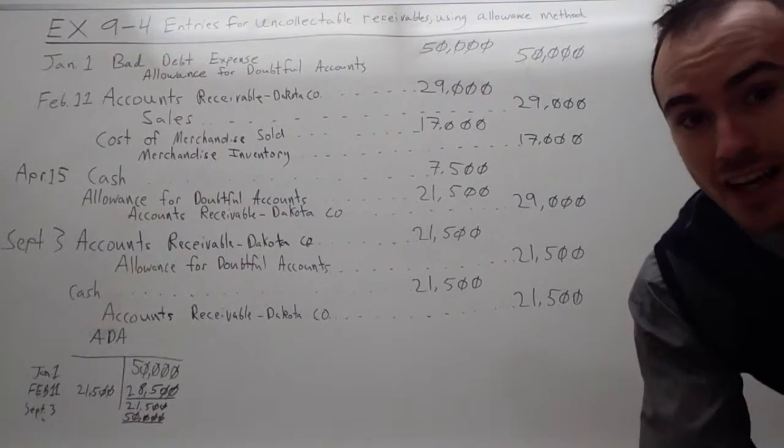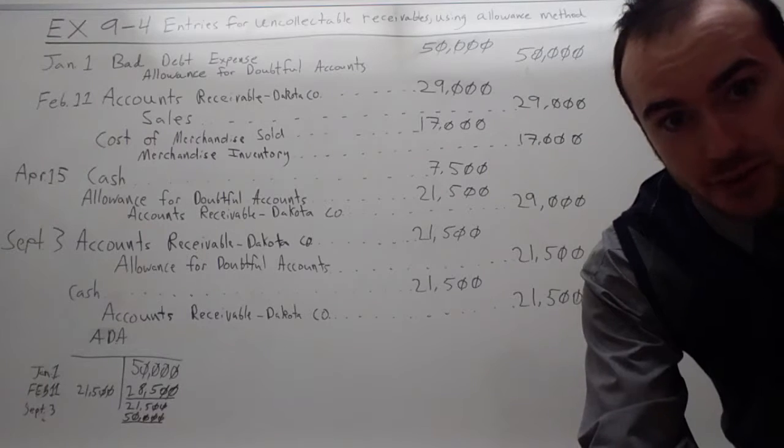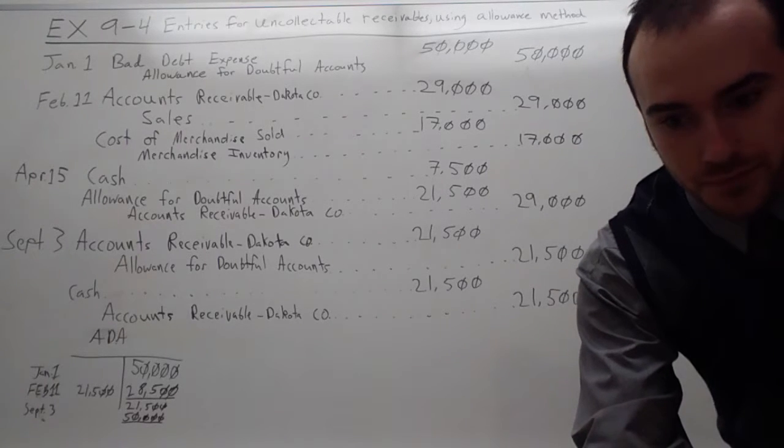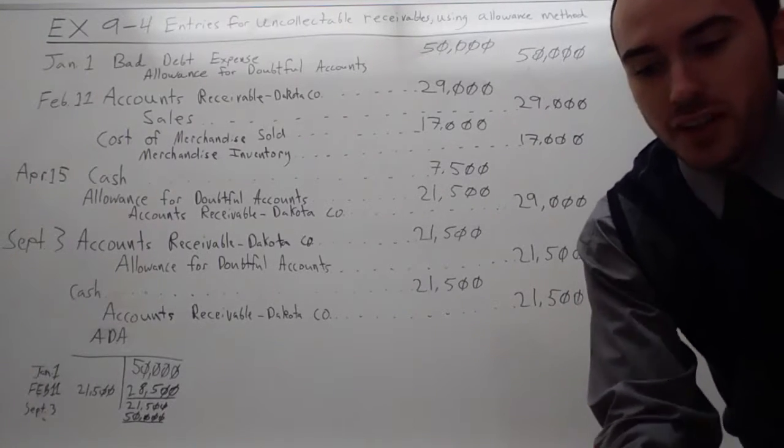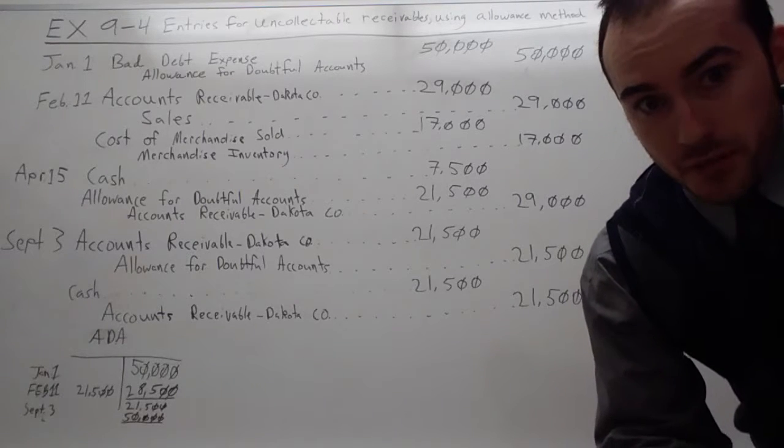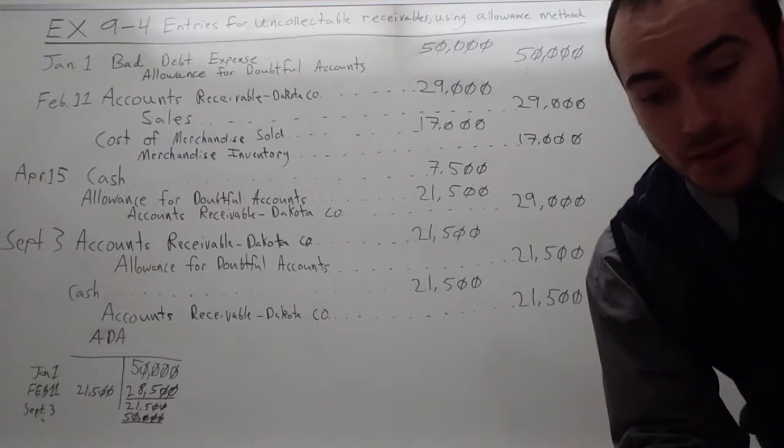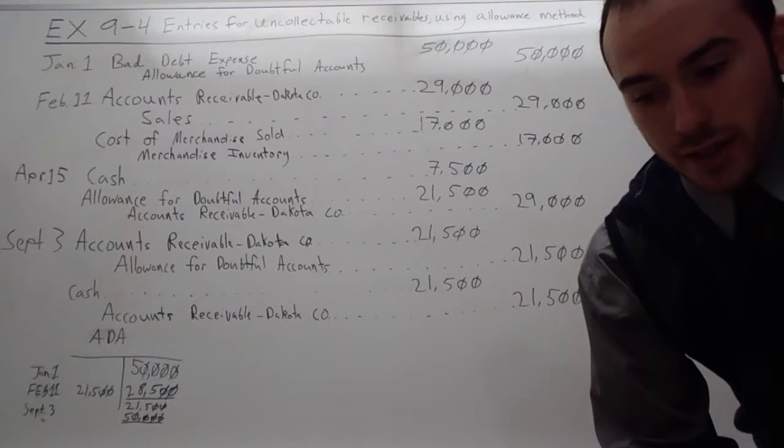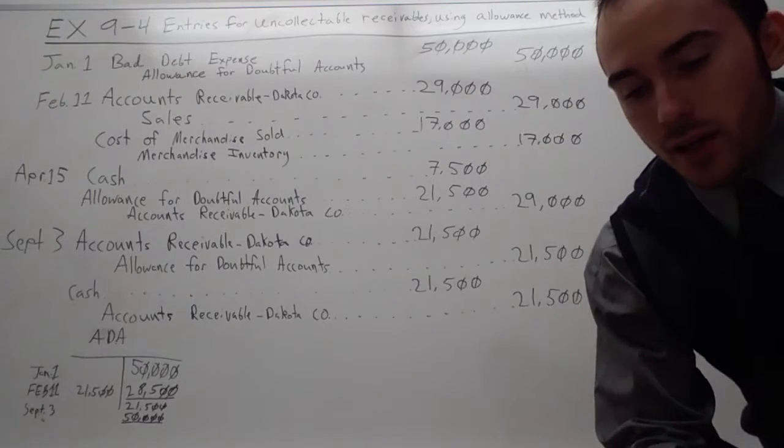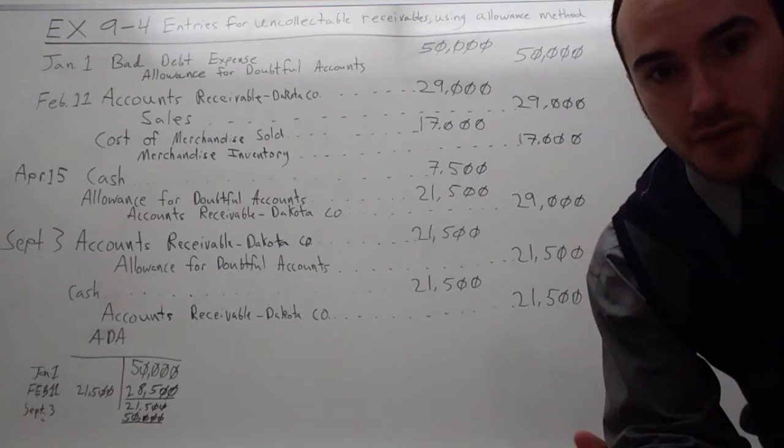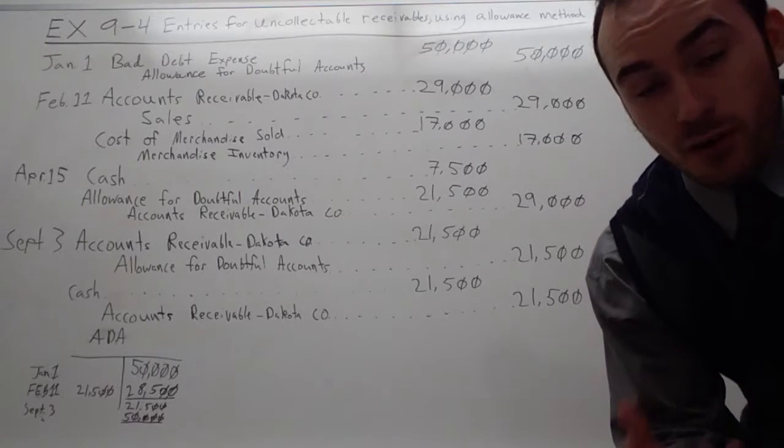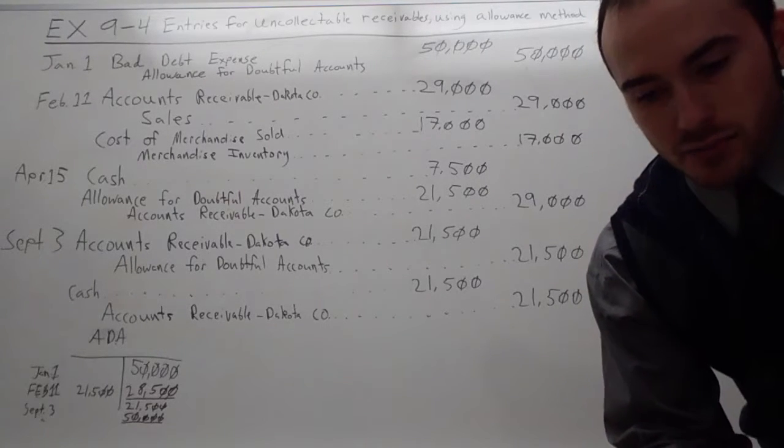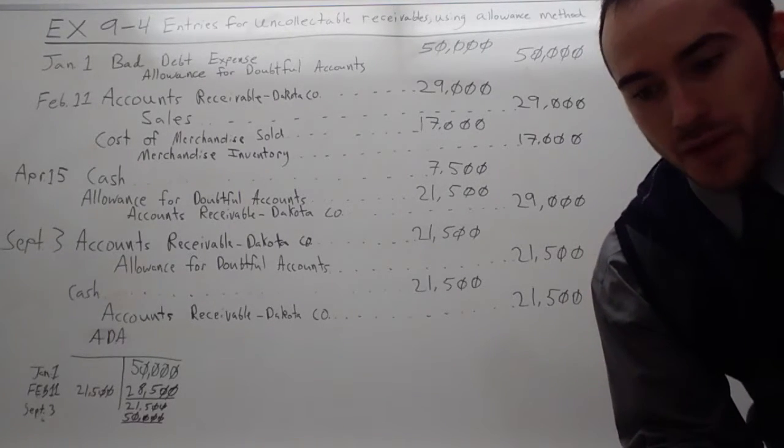Hello, this is chapter nine, accounts receivable. I'm doing an exercise today. This is using the allowance method for how to write off an account, not the direct method. I decided to start with the allowance for doubtful account method because it is sometimes a more difficult method to grasp.